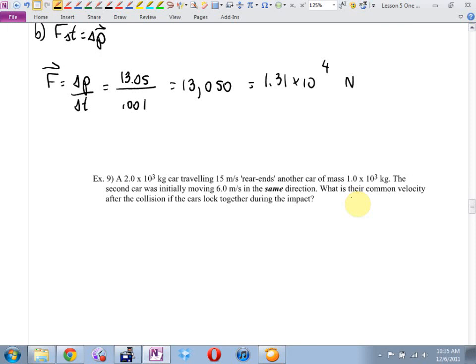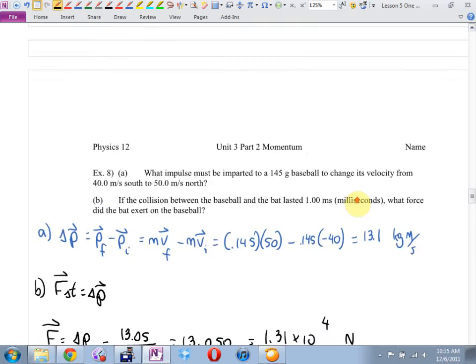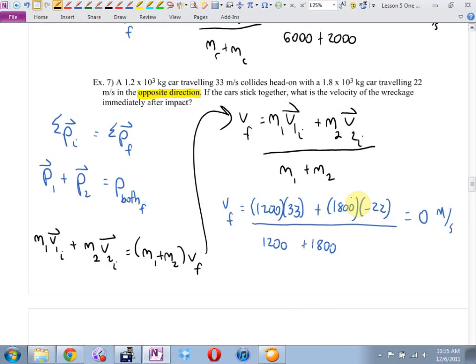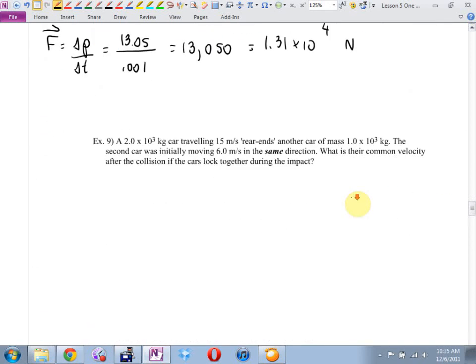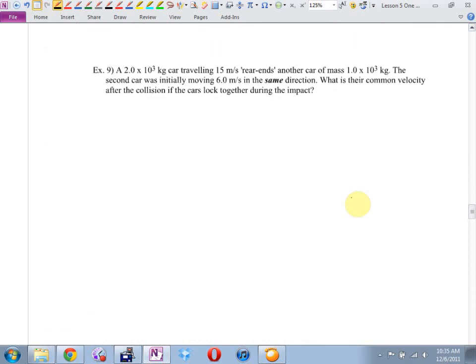Kara, we looked at a head-on collision in number 7 where, by a fluke, the momentum's exactly canceled each other out. Usually, that doesn't happen. What about rear-ending somebody? Example 9. A 2,000-kilogram car is traveling at 15 meters per second and it rear-ends another car of mass 1,000 kilograms. The second car was initially moving at 6 meters per second in the same direction. What's their common velocity if they stick together after the impact? Okay. Arvinder, is there a collision?